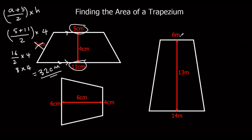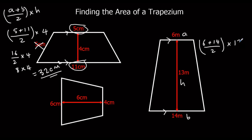Now we look at this one. A and B are the two parallel sides — that's these two. And this one is H, the height. So it's six plus fourteen over two, times thirteen. Six plus fourteen is twenty, half of twenty is ten. So ten times thirteen is a hundred and thirty metres squared.